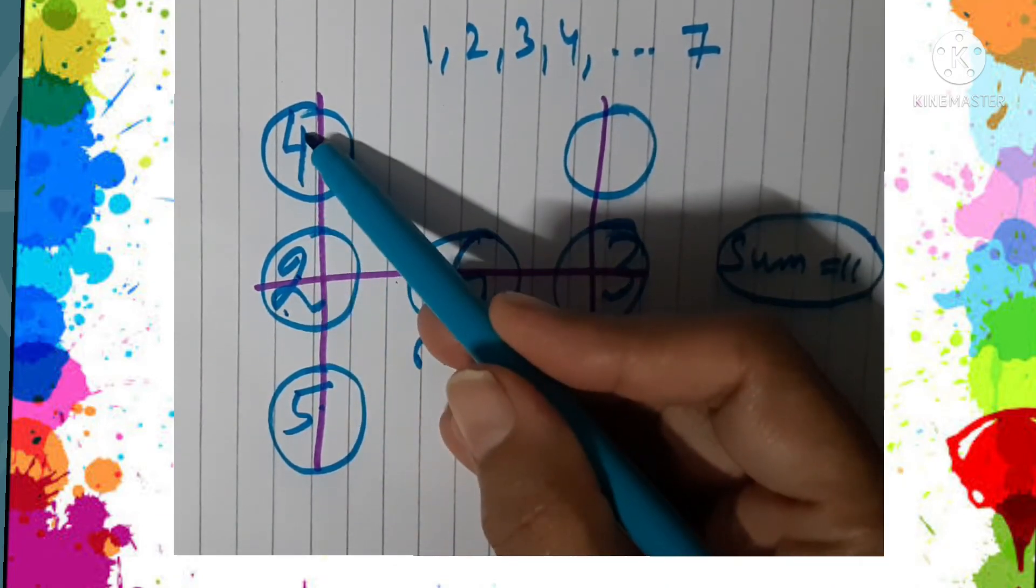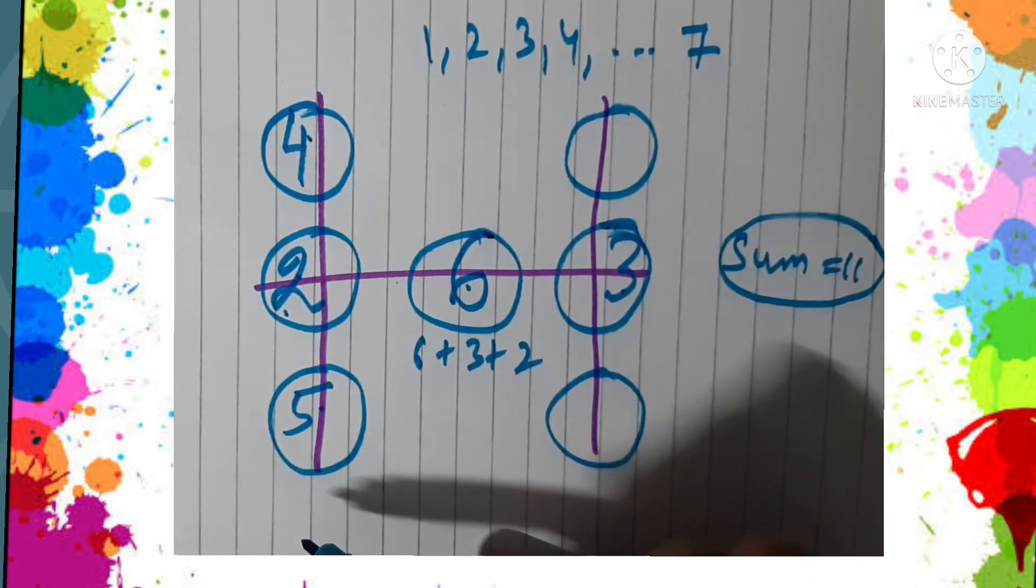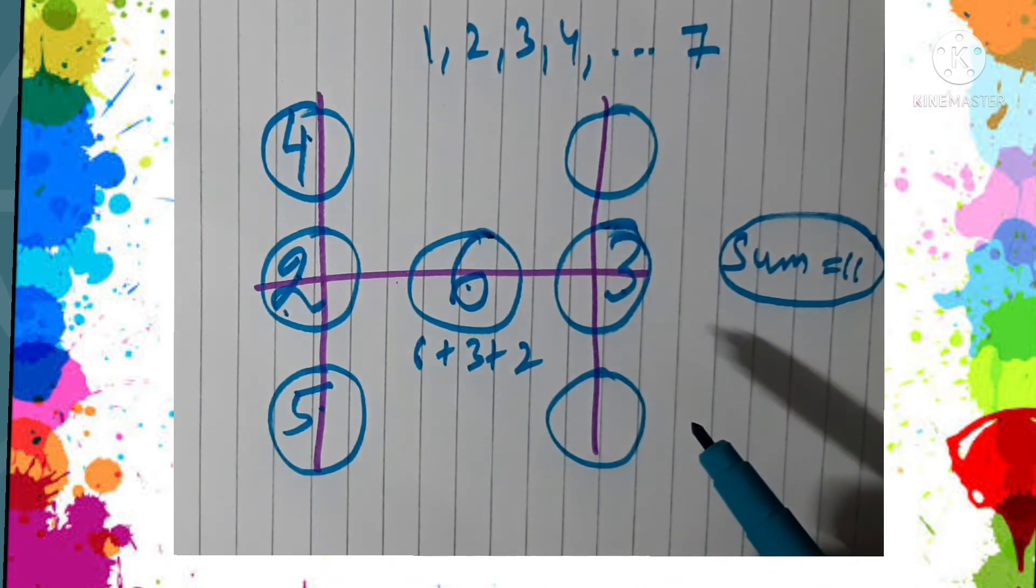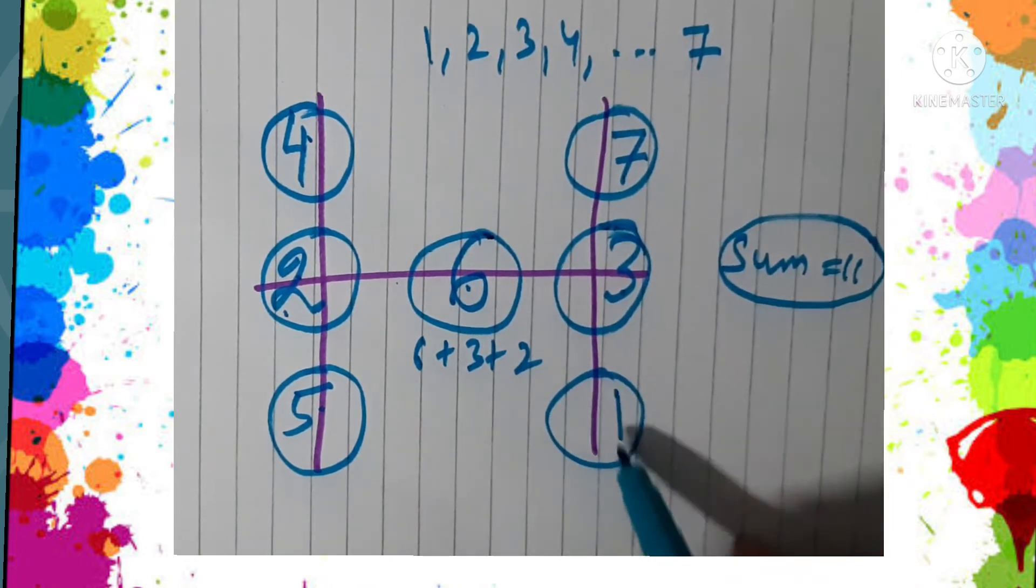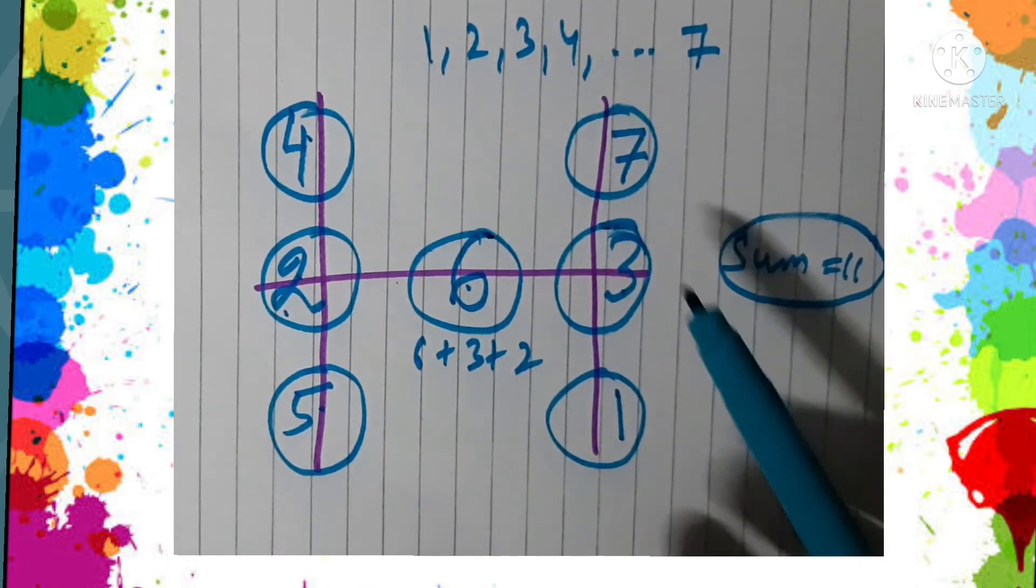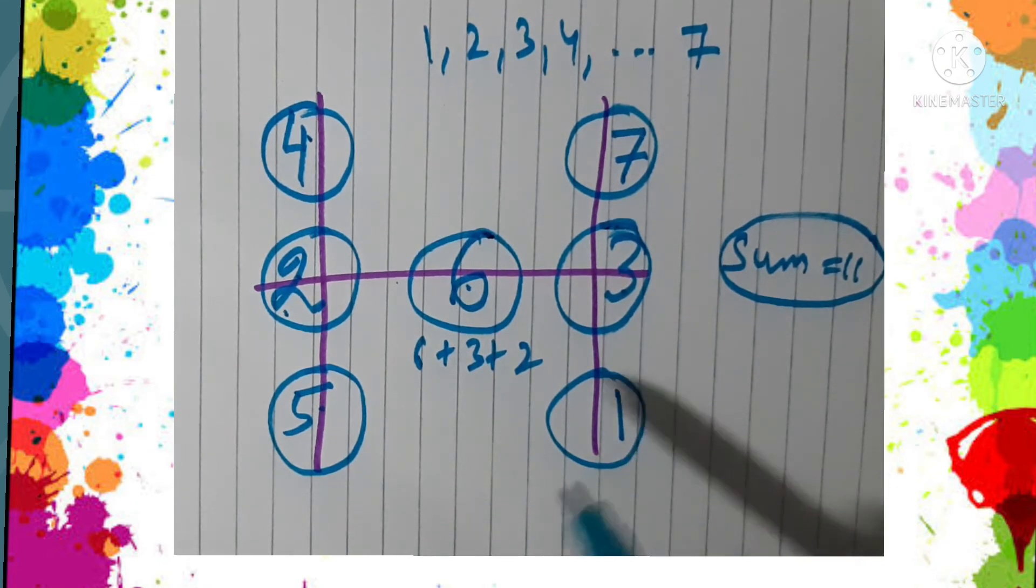Now we are left with the digits 7 and 1, so we can place 7 here and 1 at the bottom. So we see that 7 plus 3 plus 1 is also 11. If you get some other solution to this, please share.